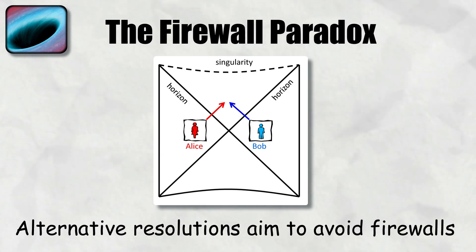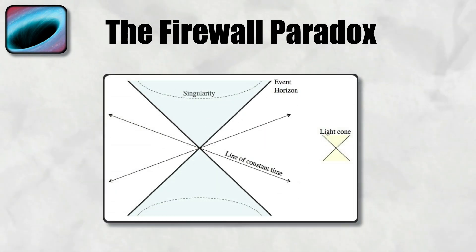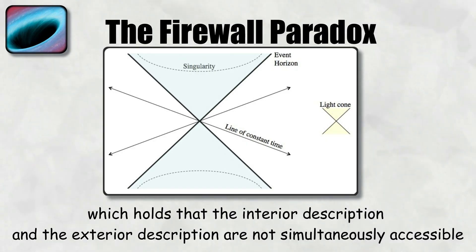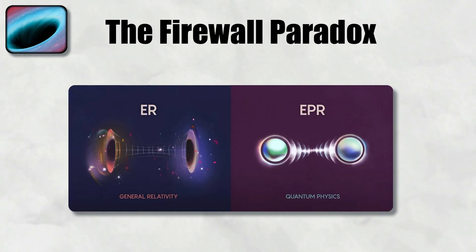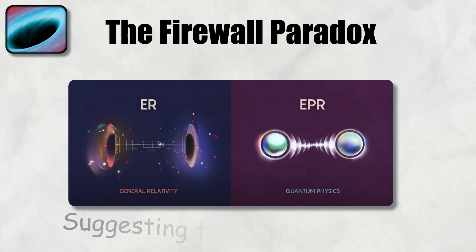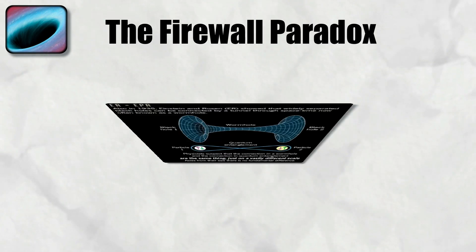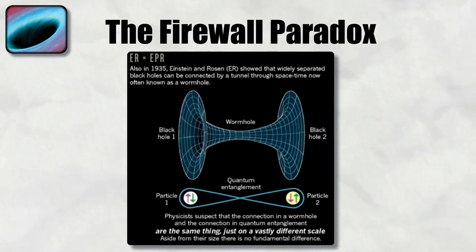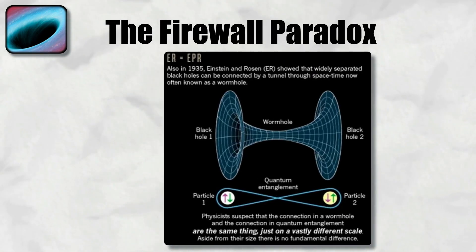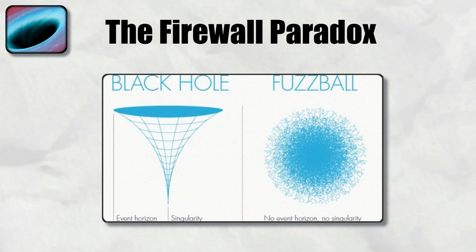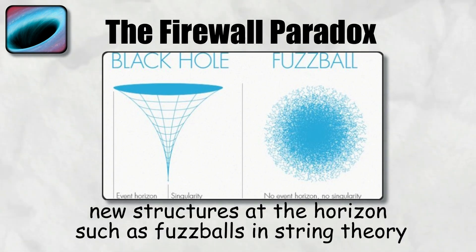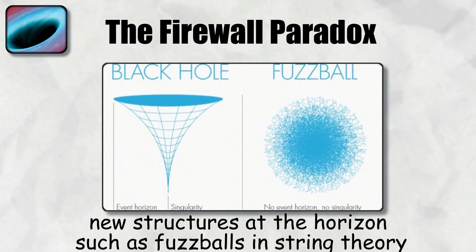Alternative resolutions aim to avoid firewalls. One idea is black hole complementarity, which holds that the interior description and the exterior description are not simultaneously accessible. Another approach is ER equals EPR, suggesting that entanglement itself is a geometric connection and the duplication of entanglement is not a paradox, but a reflection of hidden wormhole structure. Other proposals involve modifications to quantum mechanics, non-local interactions, or new structures at the horizon such as fuzzballs in string theory.